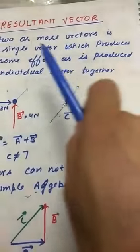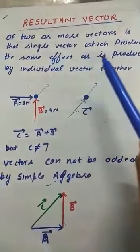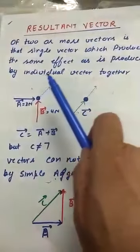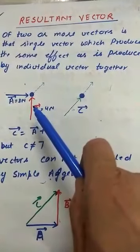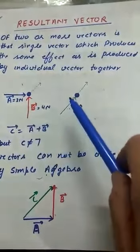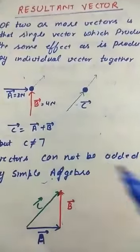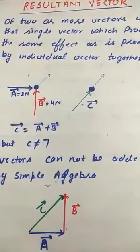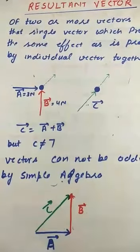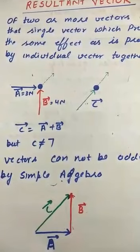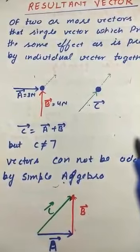That's why it is called the resultant vector. The resultant vector of two or more vectors is that single vector which produces the same effect as produced by the individual vectors together. So we can say vector C is equal to vector A plus vector B.